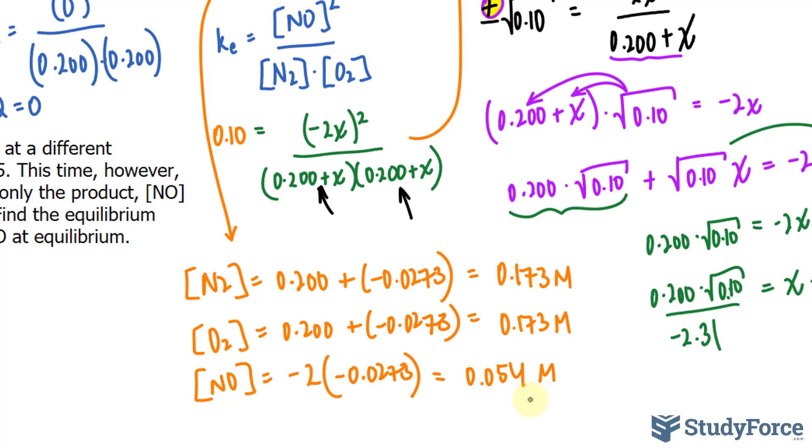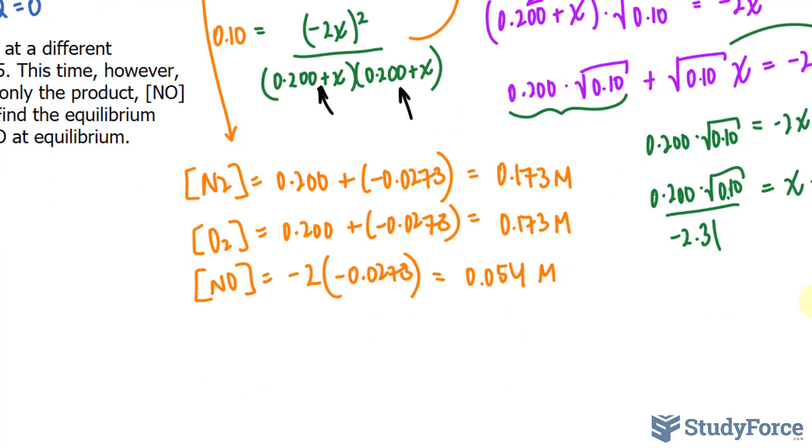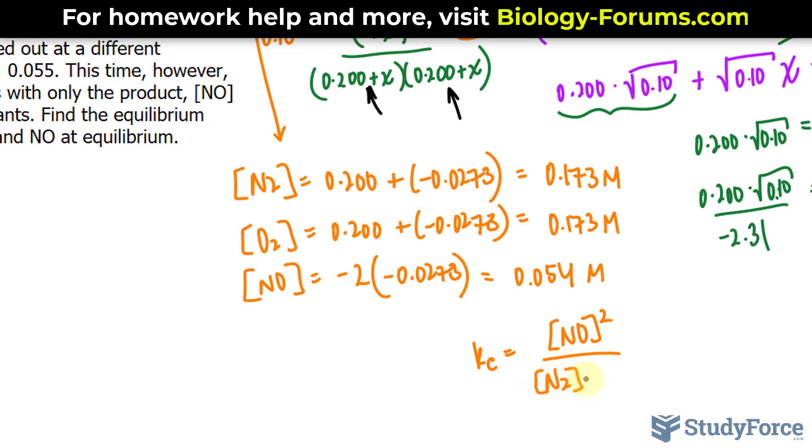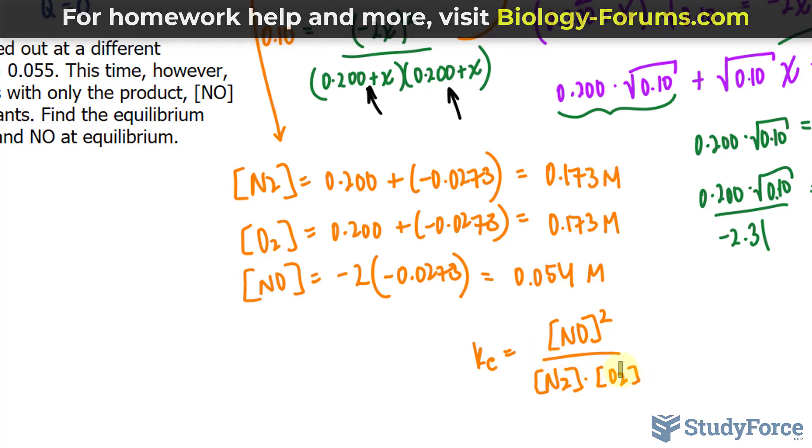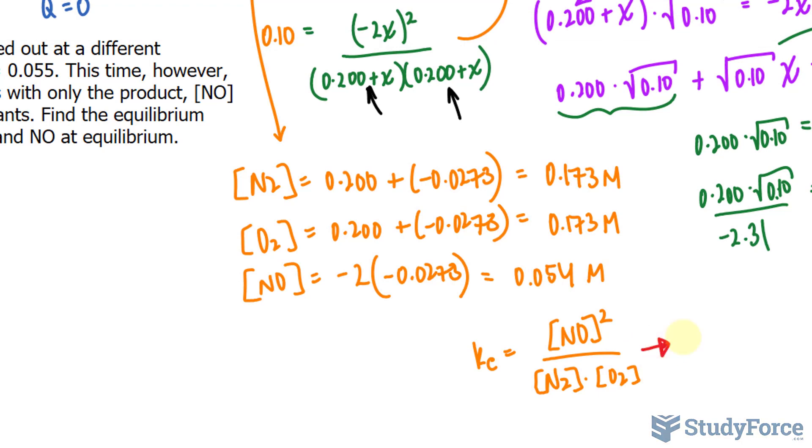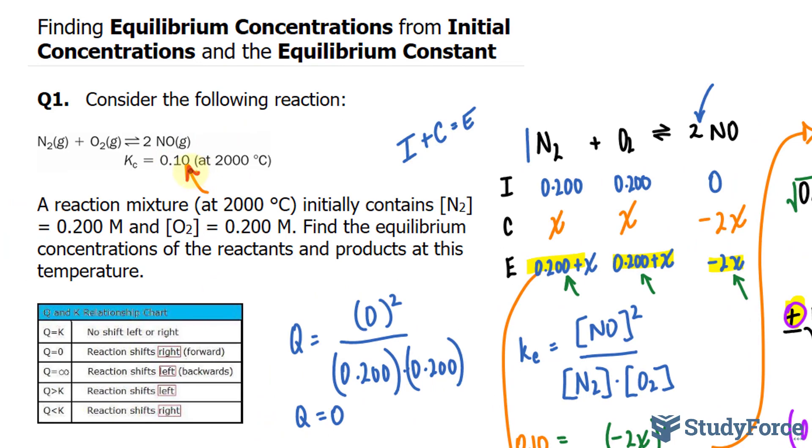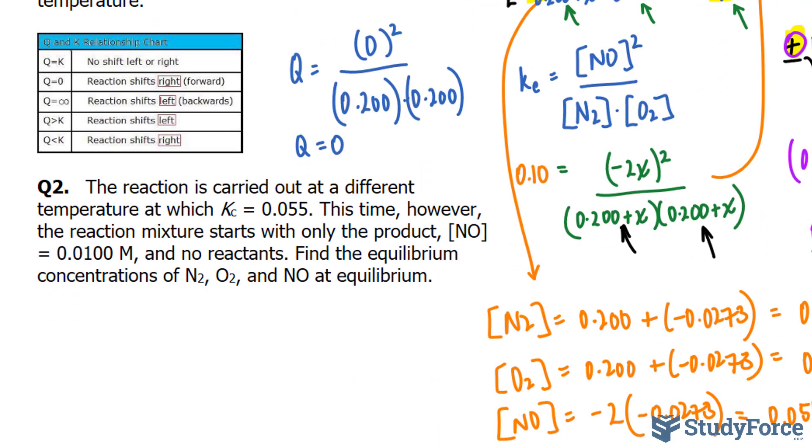Our last step could be to check if Kc matches with the one that was given in the question. Remember, ours was 0.10. So if we use the expression NO raised to the power of 2 over the concentration of N2 times the concentration of O2, and we substituted these values in their appropriate location, you should end up with a Kc that's roughly equal to 0.1, which was given in the question. And you can do that test on your own to prove that. And there you have it. That's the answer to question number one. If you'd like to see the solution to question two, make sure you return back and watch part two of this series.